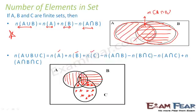What we observe here is that certain areas are counted more than once. This overlapping area between B and C is counted twice. This area between A and C is also counted twice — once with the vertical line and once with the star. And the central area where all three sets overlap is counted three times.